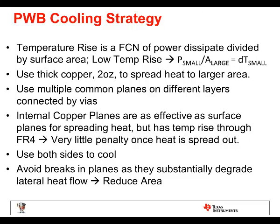Strategy for cooling. The temperature rise is a function of the power dissipated divided by the area. First, have an efficient circuit — if it's a power converter, do what you can to optimize the efficiency. Then put it on a board with a good copper plane so you can conduct the heat out to a large area, resulting in a small temperature rise. Use two ounce copper; one ounce is mandatory, two layers is better. Connect them together with vias to spread the heat out. Internal planes are very effective. You pay very little penalty once the heat is spread out to get it off the board through convection. Use both sides of the board to cool, and avoid breaks in those planes because it reduces the effective area.